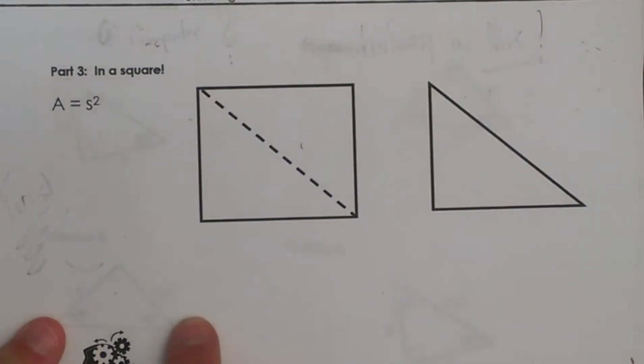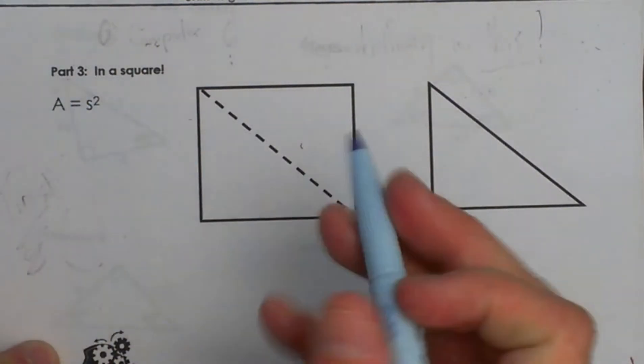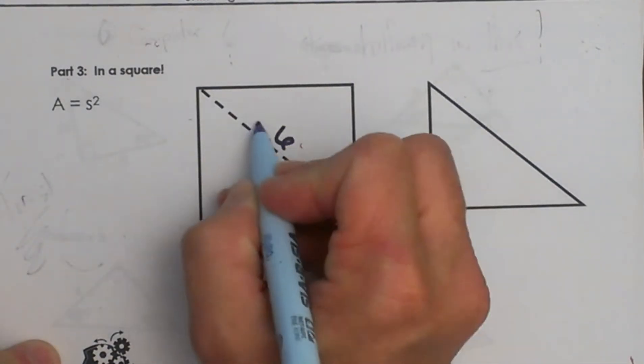Video stopped as I was halfway through this problem so I am just going to rework it. Part 3. We are trying to find the area of a square and we are given the diagonal is 6.